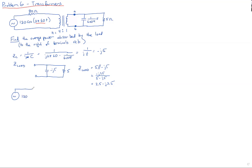Now we can write our entire circuit in the frequency domain. We have a 120V source (no angle, so it's a real number), our 80Ω resistor, a 4-to-1 transformer, and the equivalent load impedance of 2.5 − j2.5Ω. The next step is to find the Thevenin equivalent to the right of those two terminals.